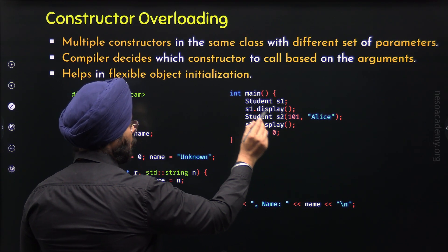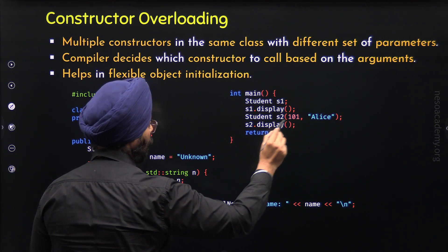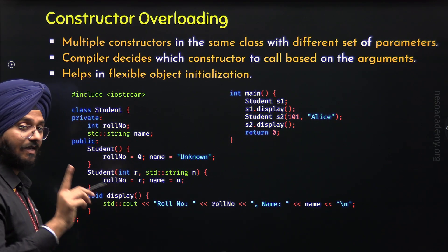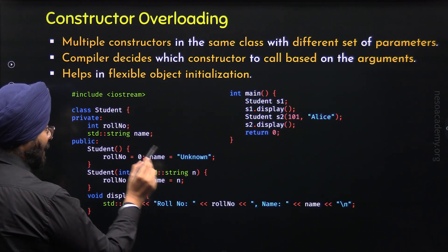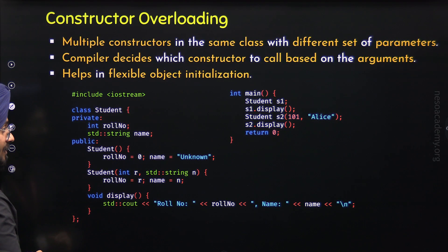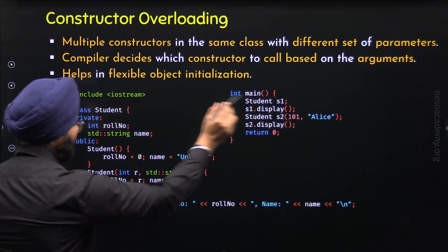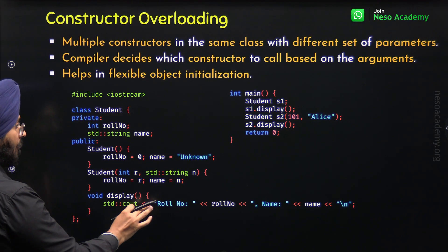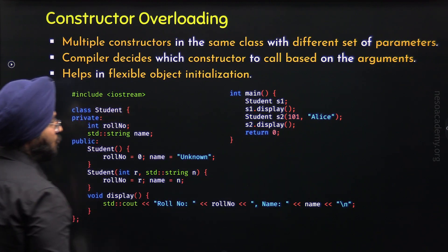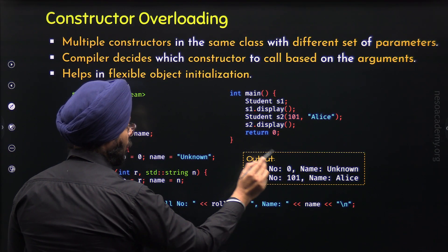After this, I have defined object S2 of class Student. I have not only defined this object, I have also initialized it — this is the direct initialization we learned in the last lecture. I am providing these values to the parameters, so the parameterized constructor will be called and these parameters will receive these arguments. These values are indirectly passed to role number and name. When we call the display function through S2, we will receive the output as role number 101 and name Alice.